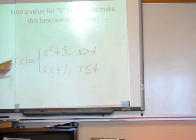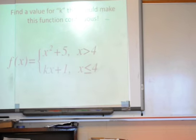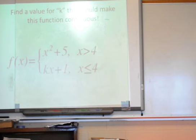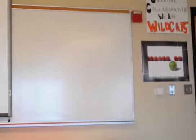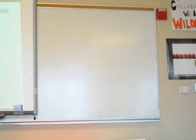So find a value for K that would make this function continuous. So find a value for K that would make this function continuous. So again, if this was continuous, what has to be true between these two functions? How to equal each other in that board? Yes. They have to equal each other at x equals 4.